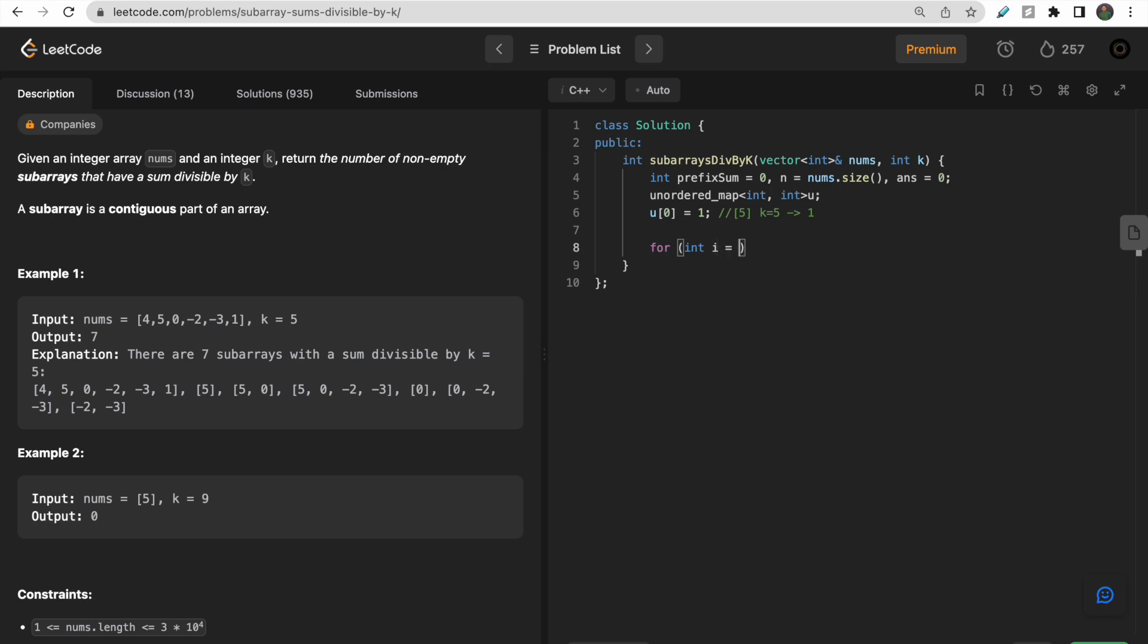Now, for all the nums from 0 to n, i++, prefix sum plus nums[i]. And we take, let me take one remainder int, remainder equals to prefix sum modulus k. Now, if remainder is less than 0, then in that case, we will simply make remainder positive by adding k.